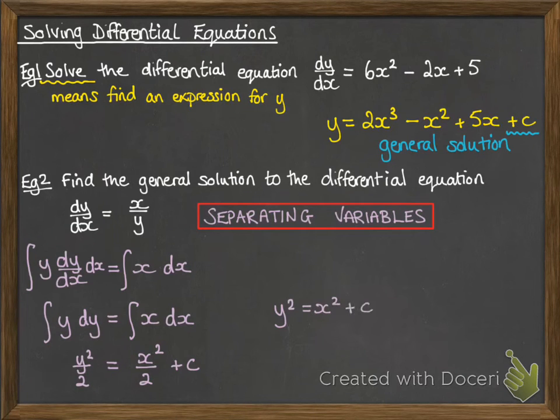And so we can multiply everything by 2, and we get y squared equals x squared. There's no need to write plus 2c, since c is an arbitrary constant. If you times it by 2, it's still an arbitrary constant. So this here is our general solution to that equation.